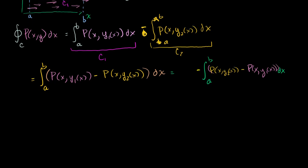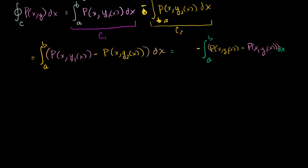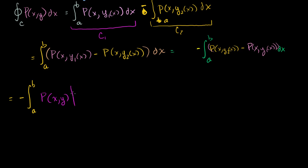These two expressions are completely equivalent — I've multiplied inside and outside by minus 1 twice. Now, the next step might look a little foreign, but it will be obvious if you've recently done some double integrals. This expression can be rewritten as negative the integral from A to B of the function P(x, y) evaluated at y = y2(x) minus evaluated at y = y1(x), all times dx. And that statement is completely identical to what we had.